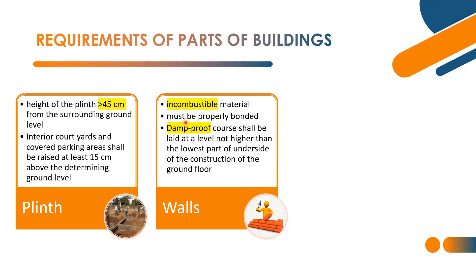Walls should be constructed with incombustible material — incombustible, meaning fire-resistant material, like wall bricks. Must be properly bonded with correct mortar application. Damp proof course shall be laid at the level not higher than the lowest part of the underside of the construction of the ground floor. The damp proof course shall be of incombustible material.